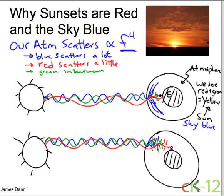Well, that's why at sunset the sky is red. I should say red-ish, right? Because there's still some green and blue light that makes it through, especially the green — and that's why you get that sort of orange-ish hue. So now we know why at sunset the sky is red, during the middle of the day the sky is blue, and the sun is yellow.